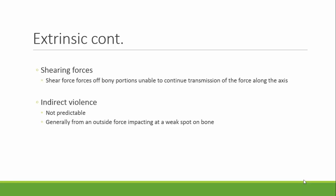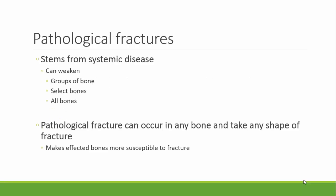Intrinsic fractures come from pathological conditions. Intrinsic disease can weaken either groups of bone, select bones, or bones in general. Pathological fractures can occur in any bone and take any shape of fracture, causing all bones to be more prone to fracture.